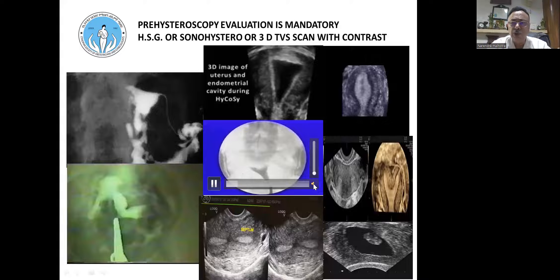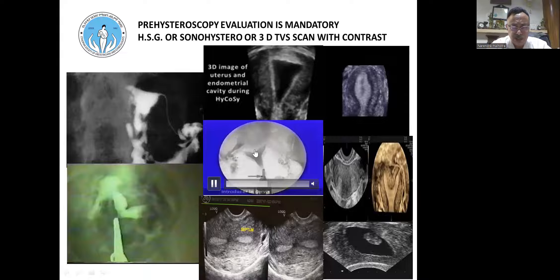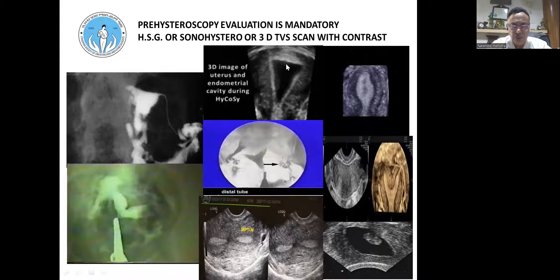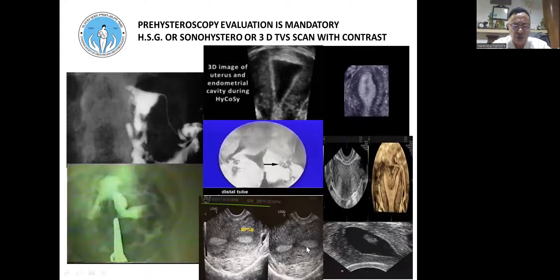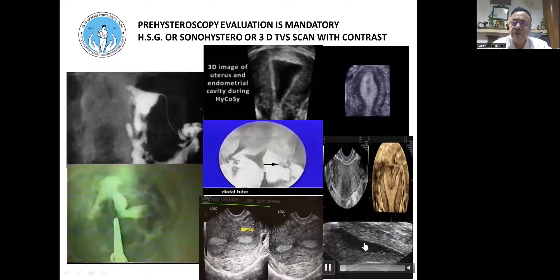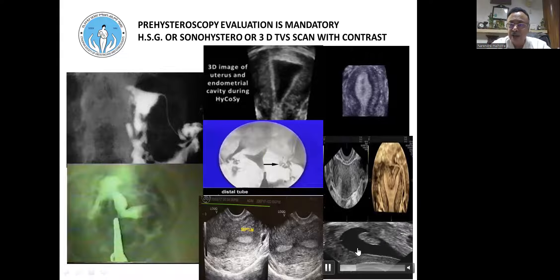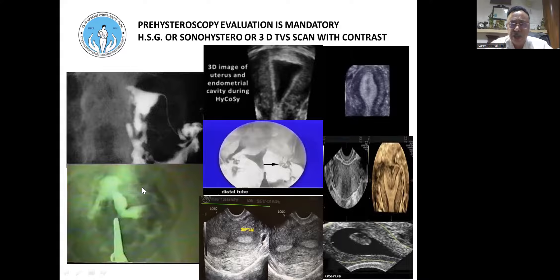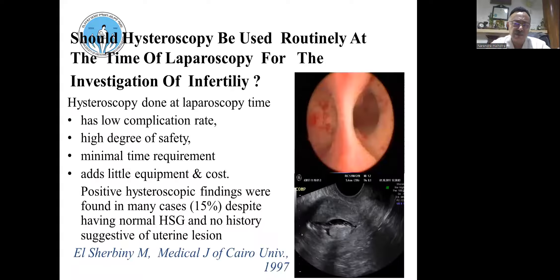Before any hysteroscopy, a good cavity evaluation must be done — either by fluoroscopic HSG for permanent pictures showing septum or synechiae, or by fluid 3D ultrasound. A fluid 3D cavity can be rotated to characterize pathology. A 2D picture can show a septum, and a sonohistogram with saline can clearly show a polyp with a pedicle that can be tackled in the OPD. Today we depend heavily on transvaginal 3D ultrasound with and without fluid or contrast.